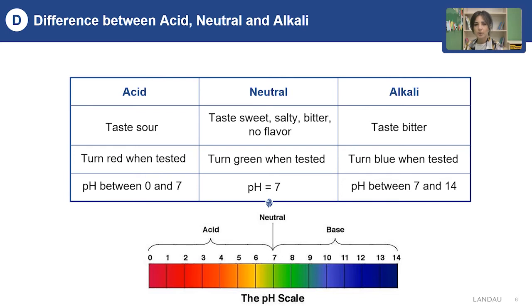What about their pH values? Acids have pH values between 0 and 7, neutrals have a pH of 7, and alkalis have pH values between 7 and 14.